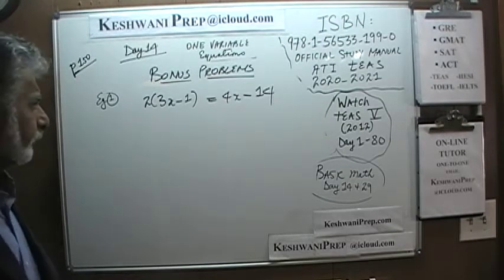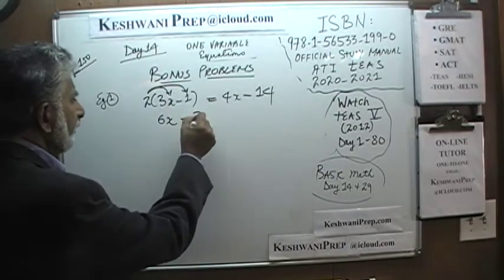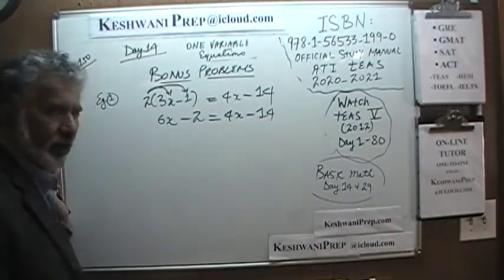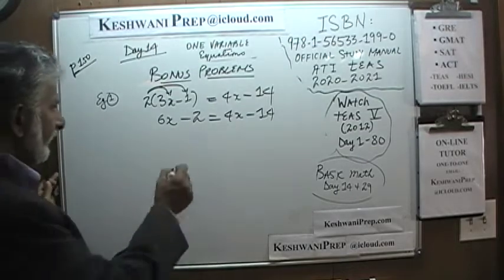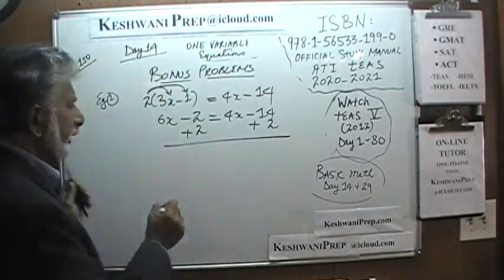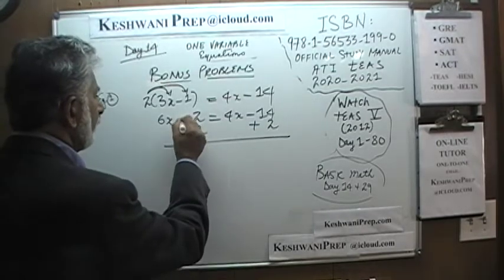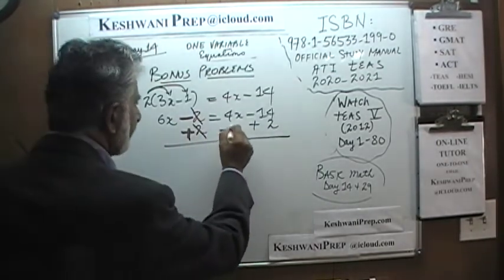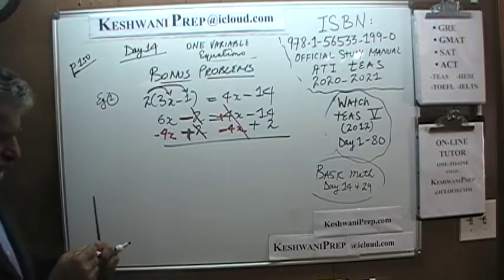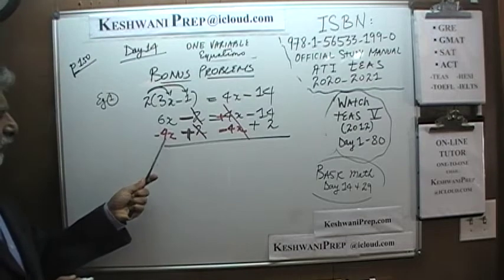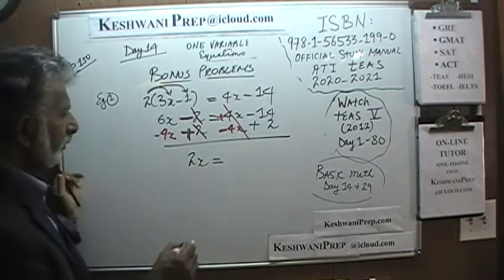Alright, let's take a look at it. 2 times 3x is 6x, and 2 times negative 1 is negative 2, so we get 6x minus 2 equals 4x minus 14. Our job is to bring all the unknown quantities to one side and all the known quantities to the other side. Let's add 2 to both sides to get rid of the negative 2. Negative 2 and positive 2 cancel. Let's also subtract 4x from both sides — positive 4x and negative 4x cancel. We end up with 6x minus 4x, which is 2x. On the other side, negative 14 and positive 2 gives us negative 12.